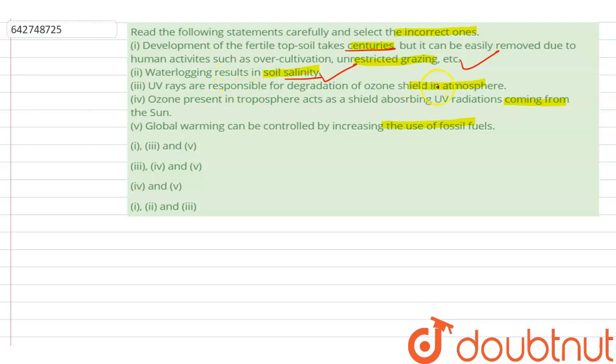UV rays are responsible for the degradation of ozone shield in the atmosphere. This is also true, as the ozone which is present in the stratosphere is the good ozone, and the UV rays are destroying that ozone which is present in the stratosphere. So this statement is also true.